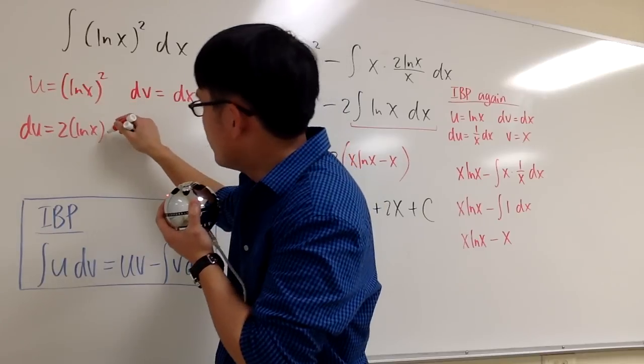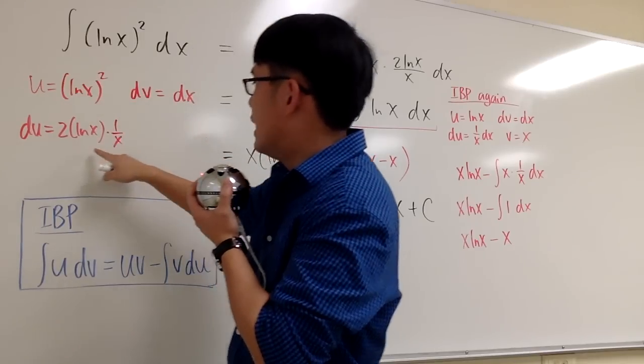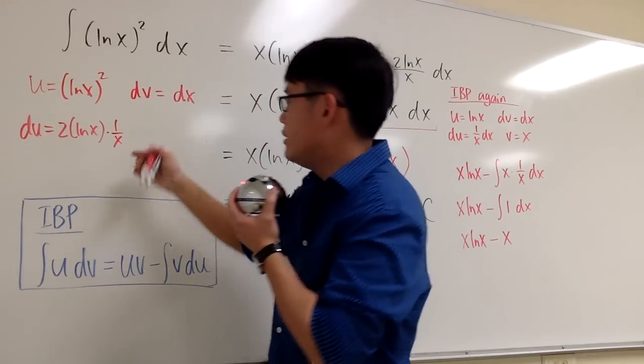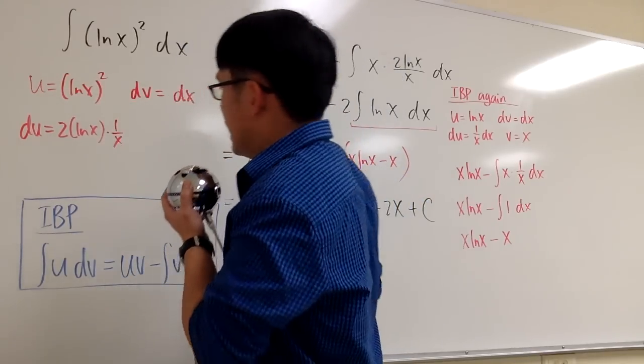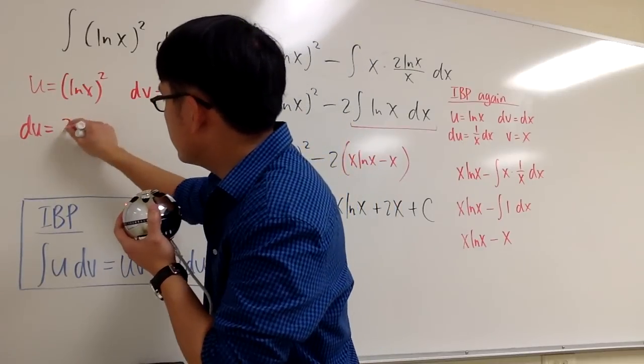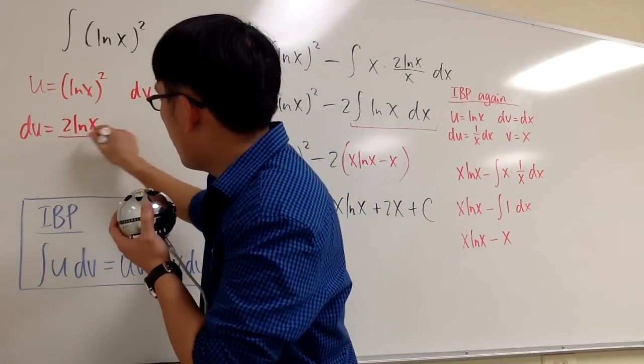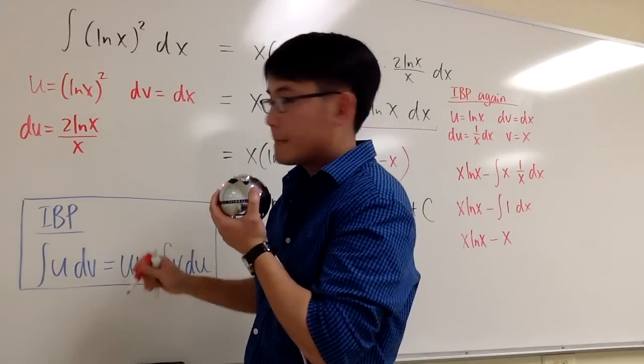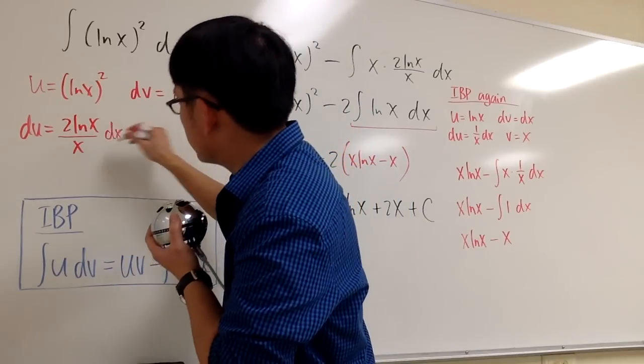The derivative of ln x is 1 over x. So we have this for du, and technically, I also have to have dx, but let me just write this as 2 ln x on the top over x. And now I'll attach dx on the side.